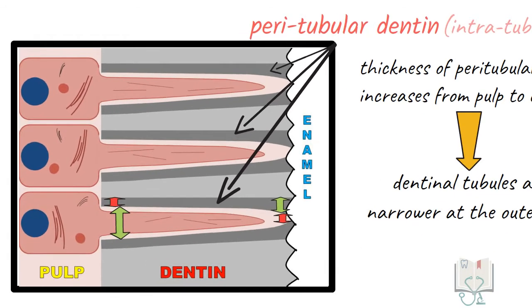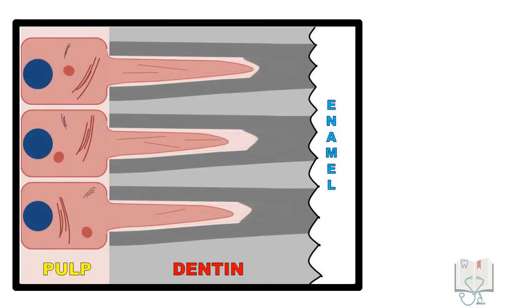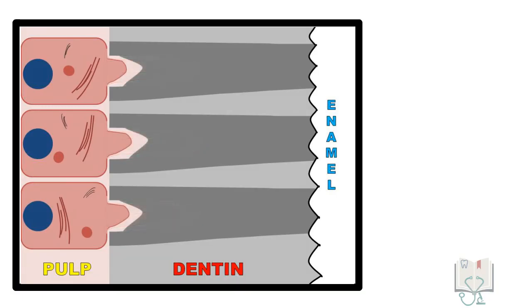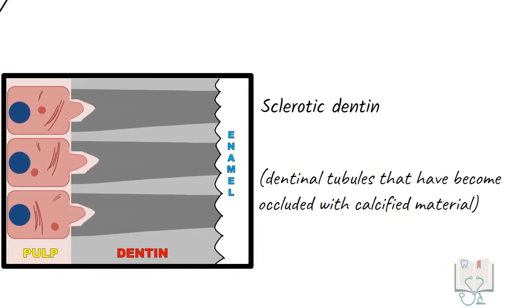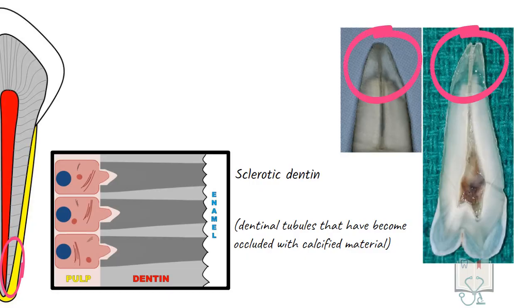With age, dentinal tubules become completely occluded with continuous deposition of peritubular dentine. This is called as sclerotic dentine. It occurs mostly at the apical third of the root. This changes the refractive index of dentine and thus is also called as transparent dentine or translucent dentine.